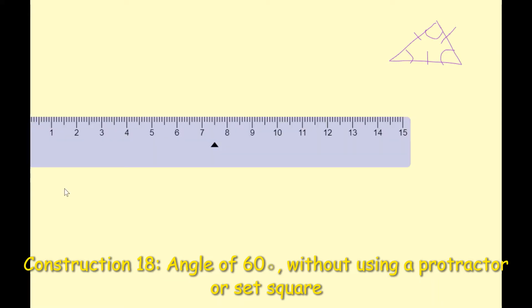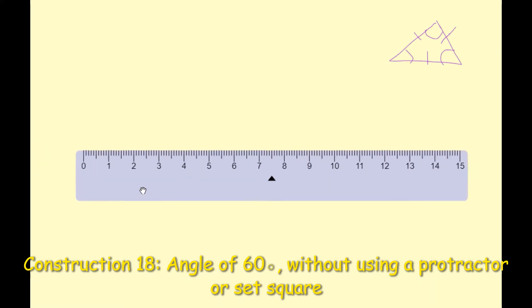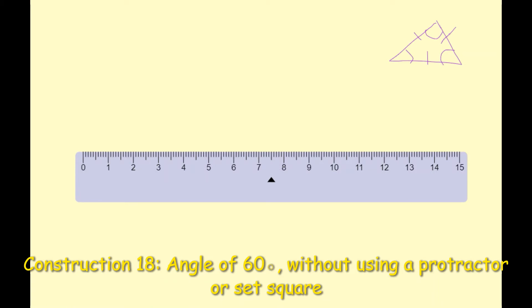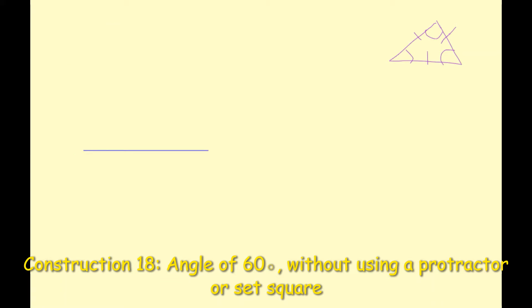So I'm going to use my ruler now and draw a line segment of five centimeters. So I'm starting at zero and drawing a line to five. I'm going to put a dot at both ends of my line segment to denote that it's a segment.